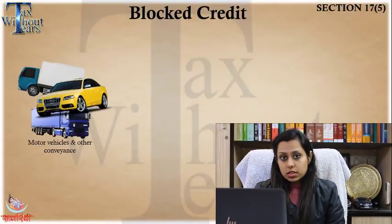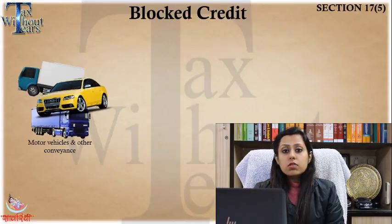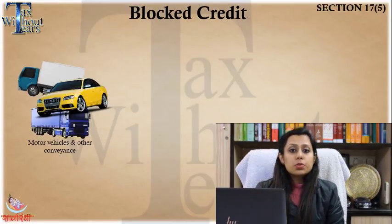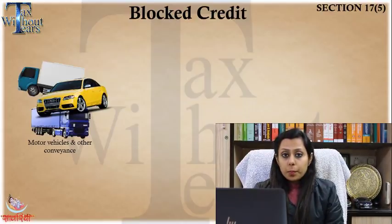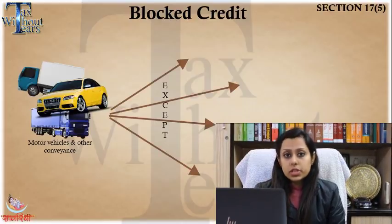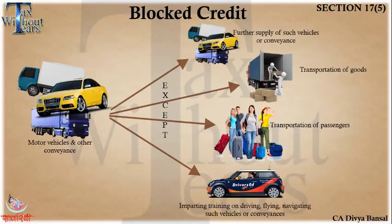Next comes a very important concept — block credit under Section 17(5). There are certain items whose credit is not eligible. First is motor vehicles and other conveyances — if you purchase any motor vehicle or conveyance, you are not eligible to claim the credit. However, you can claim it in a few cases: when you are utilizing it for further supply of such vehicles, for example car dealers selling cars to customers can take the credit when purchasing from manufacturers; when transporting goods; when transporting passengers; and when utilizing such vehicles for imparting training on driving, flying, or navigating.